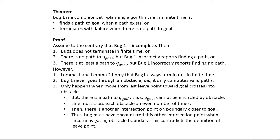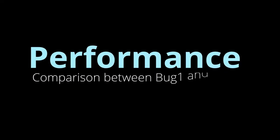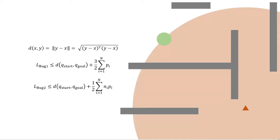That was a lengthy argument, but it's very reassuring to know our planner will never report a wrong path. Now let's discuss the performance of the Bug 1 and Bug 2 path planners, since Bug 2 seems more efficient as it skips full circumnavigation. To compare them, we need the distance function — which is simply the norm from position x to position y.